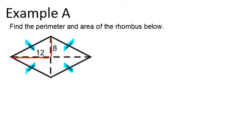One property of a rhombus is that its diagonals are perpendicular. That means this is a right angle, and therefore this is a right triangle.